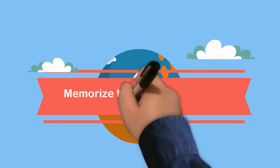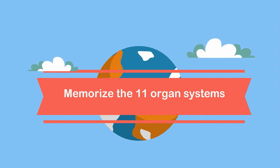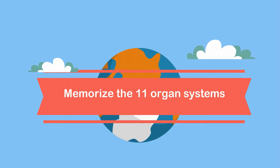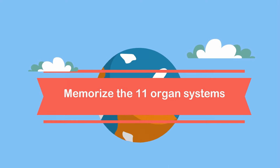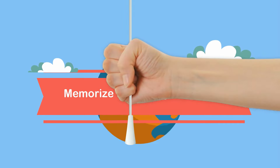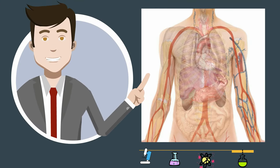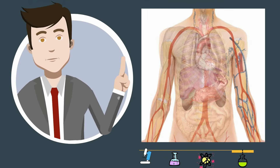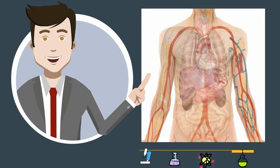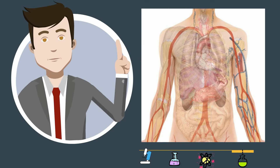Welcome to Moo Moo Math and Science. In this video I will help you memorize the names of the 11 organ systems of the human body. The human body is made up of cells which make up organ systems that work together to keep you alive.